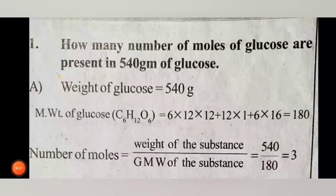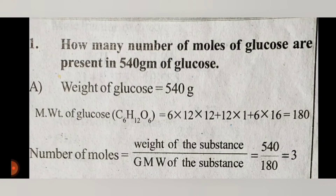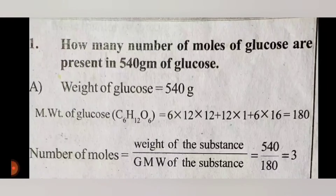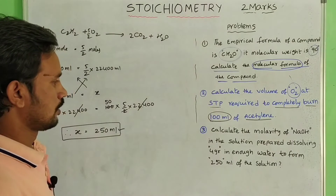Next problem: how many moles of glucose are present in 540 grams of glucose? Given: weight of glucose = 540 grams, molecular weight of glucose = 180. Number of moles = weight ÷ molecular weight = 540 ÷ 180 = 3 moles.